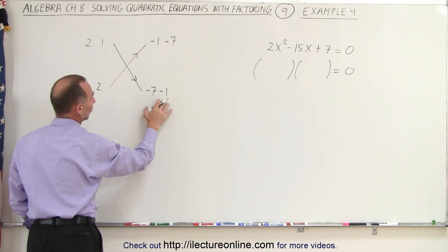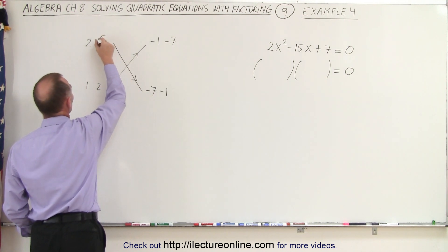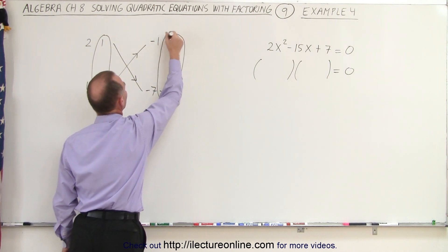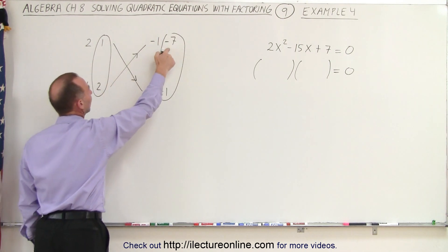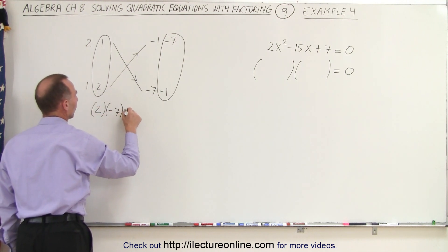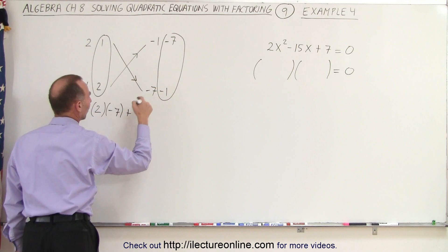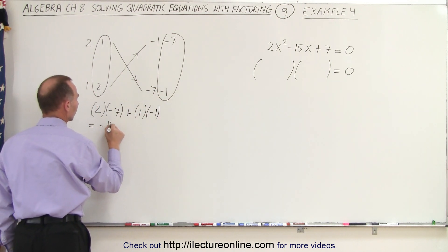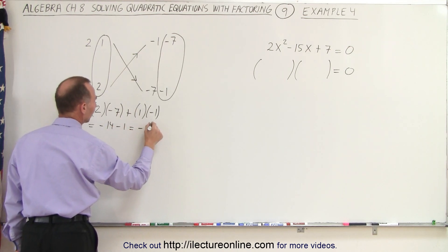So it looks like that's probably the combination. And then, of course, 1 times the negative 1 adds up another negative 1. So it looks like this and this will give us the right combination. So 2 times the negative 7 plus 1 times the negative 1. That is equal to negative 14 minus 1, which is negative 15.